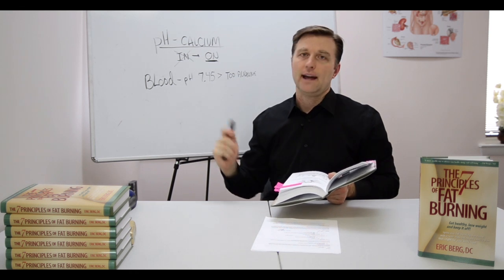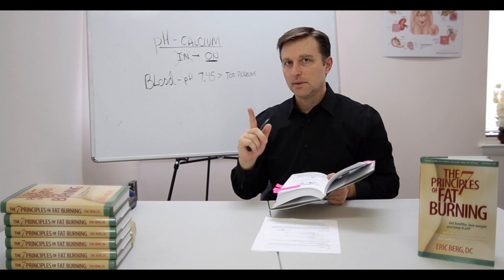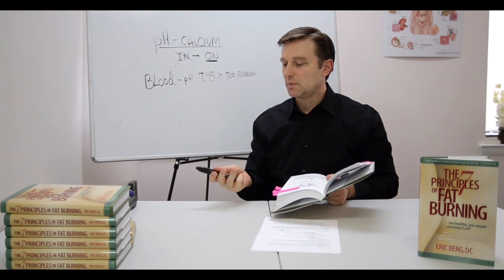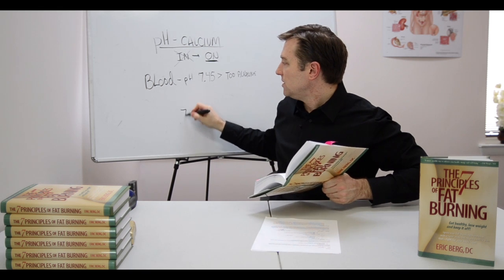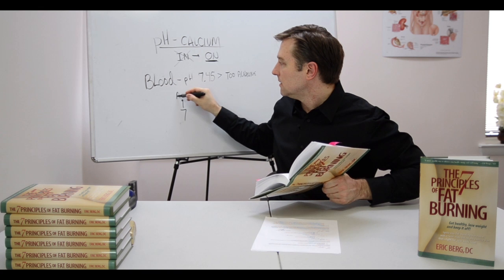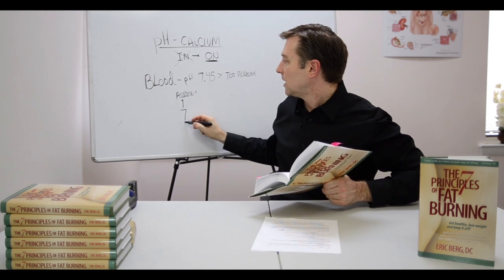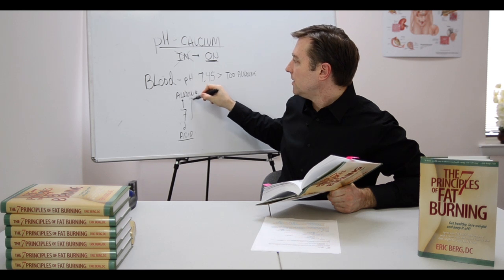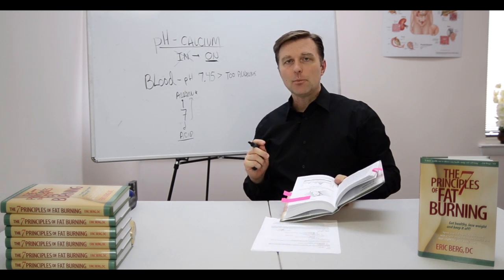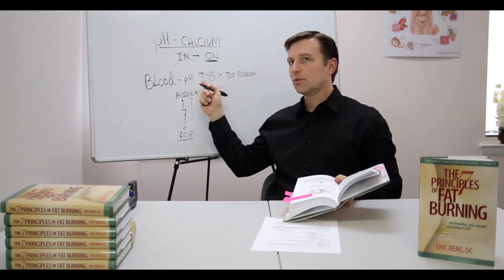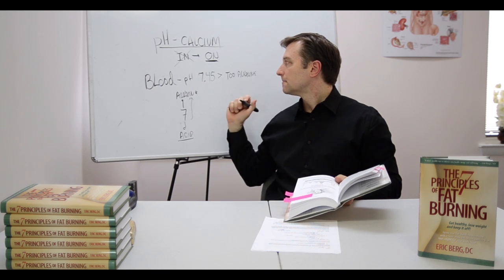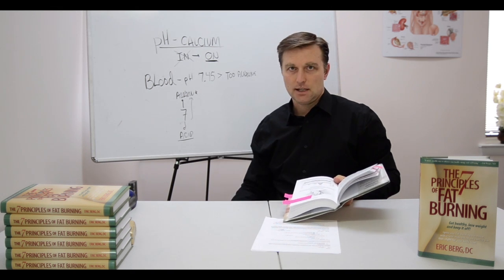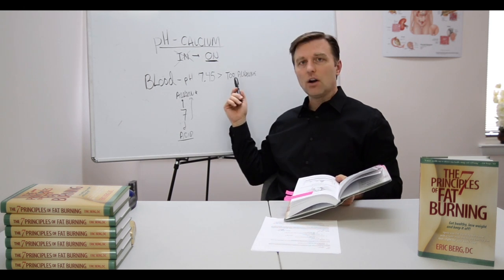So you may look at that and think the person's too acid and we need to alkalize them. That would be a big mistake, because when you lose your acids, your pH then starts becoming more alkaline. 7 is neutral — when you go above 7 you're becoming more alkaline, and below 7 it's more acid. So if you're losing all your acids, your pH is going to rise upward. The blood operates at a very narrow band between 7.34 and 7.45 — just a very small range.